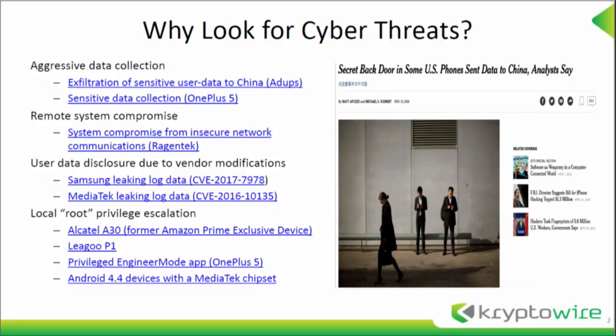There are some recent examples for Android. On the right is from the New York Times when we found that the number one selling unlocked smartphone on Amazon was sending the user's text messages and call log to a server in China every three days. It also had a command and control channel where it could execute commands as the system user.